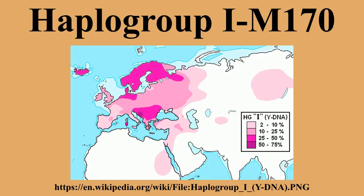It would seem that separate waves of population movement impacted southeastern Europe. The role of the Balkans as a long-standing corridor to Europe from southwestern Asia is shown by the phylogenetic origins of Haplogroup IJ, the parent haplogroup, and the M429 mutation. This common ancestry suggests that subclades of the ancestral Haplogroup IJ-M429 probably entered Europe through the Balkans sometime before the last glacial maximum.